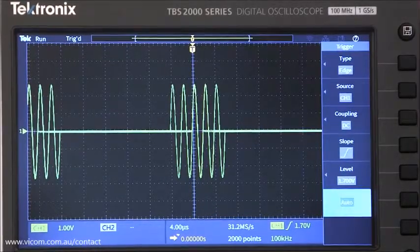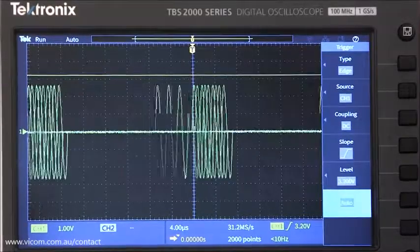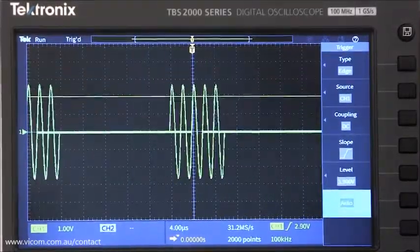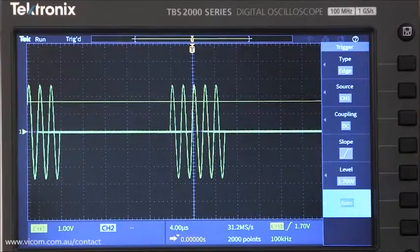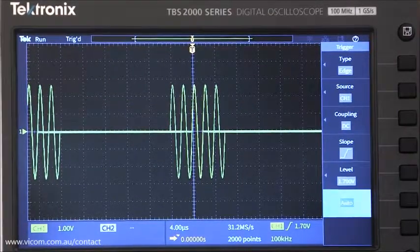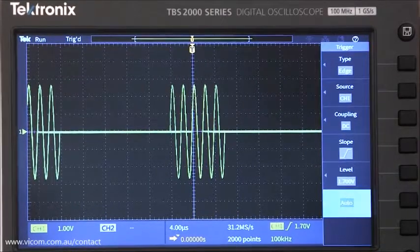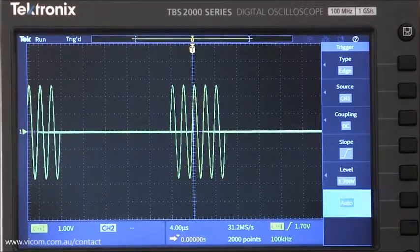In this mode, the scope waits for a trigger, and if it doesn't see one, it captures and displays a waveform even if the trigger conditions aren't being met. Auto mode shows waveforms that aren't synchronized, but it's really useful for setting up the trigger. For signals that meet the trigger conditions pretty often, auto mode will give you a stable trigger.